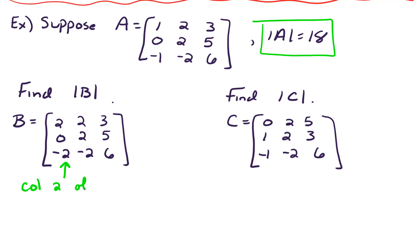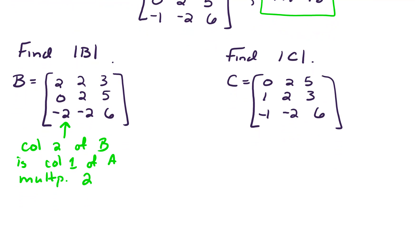So column 2 of B is column 1 of A multiplied by a scalar 2. And we know how multiplying a row or column by a scalar works. We did that proof, actually. So this tells us that the determinant of B equals 2 times the determinant of A. So the determinant of B must equal 2 times 18, which is 36. So that saved us a lot of work.